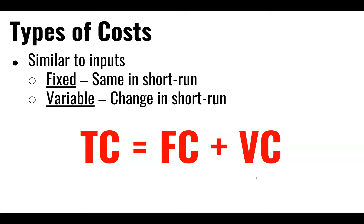Variable costs are any costs that can change over time. For example, if I run a restaurant, my rent is fixed — I sign a lease for 12 months and I can't change it until the contract is over. How many people I hire, the costs of ingredients, the hours that I'm open — these are all variable in nature. We add those two types of costs together, fixed costs and variable costs, and that tells me the total cost for my operation.